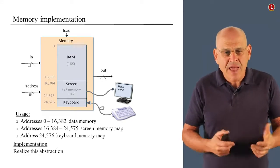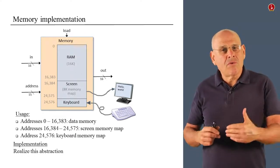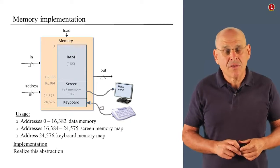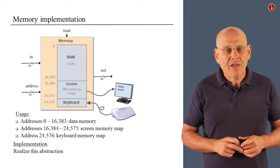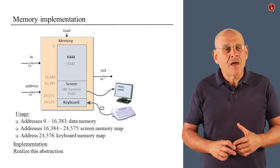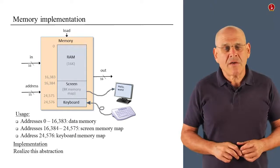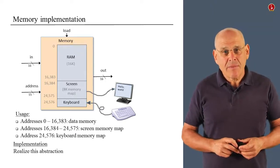And finally, if the address is 24576, then you want to route it to the keyboard memory map. So, that's basically what your HDL code has to do. And if you will do it, you will achieve this glue that holds together these chip parts and delivers the overall functionality of the data memory.